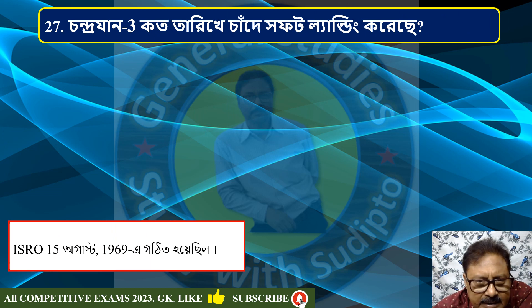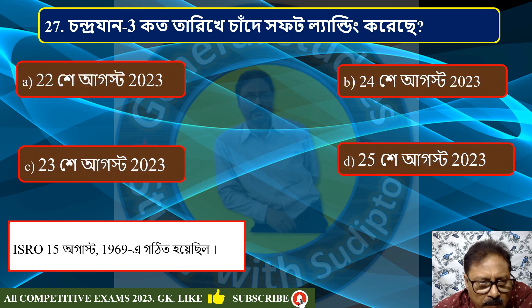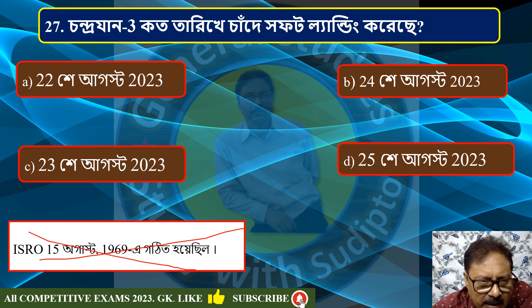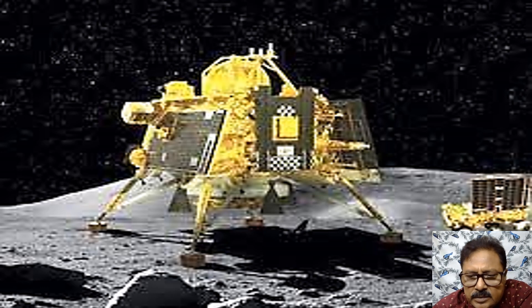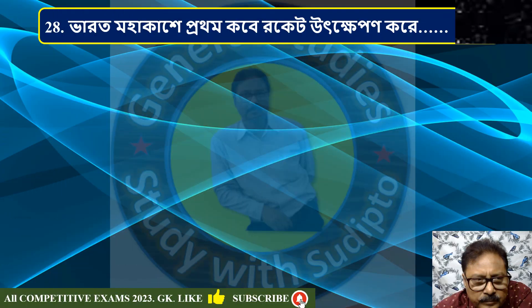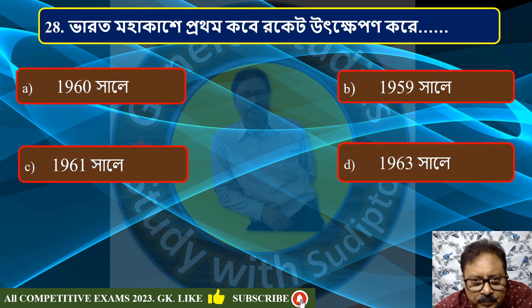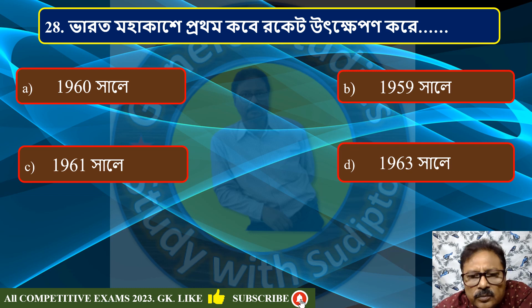Chandrayaan 3 landed on the Moon. The options for the landing date were 22 August 2023, 24 August 2023, 25 August 2023. The correct answer is 23 August 2023.